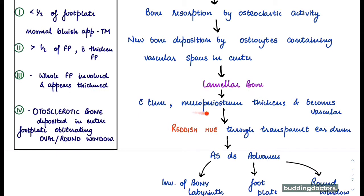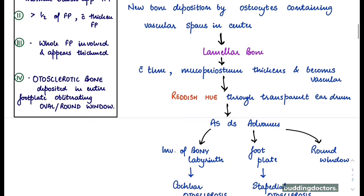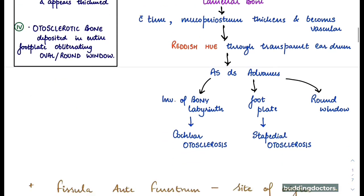With time, the mucoperiosteum thickens and becomes vascular, so when you see the tympanic membrane it appears red — there is a reddish hue because it becomes vascular. As the disease advances, there can be three outcomes: if it involves the bony labyrinth, there is cochlear otosclerosis; if it involves the footplate, there is stapedial otosclerosis; and if it involves the round window, that is the third situation.